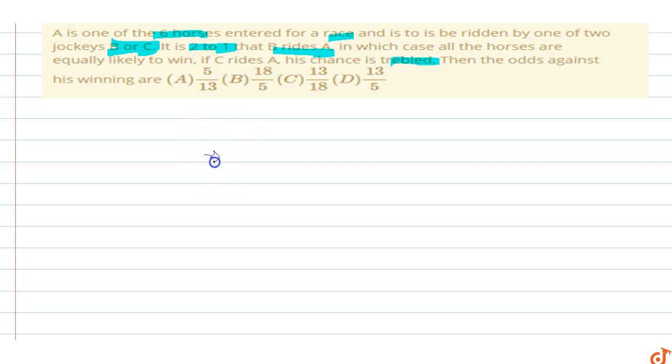This equals 1/6 times the probability that B rides A, so this probability is 2/3. 2 to 1 that B rides A. So this equals, the 3 cancels out to 1/9.